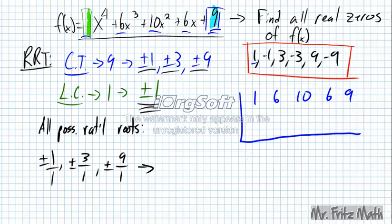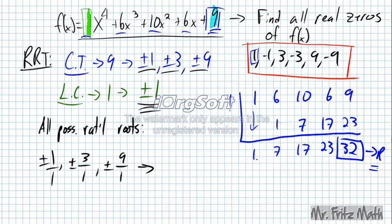I bring the 1 down. Multiply 1 times 1. It's going to give me 1. Add 6 and 1, 7. And I continue this process. So since my remainder is not equal to 0, then I've confirmed that 1 is not one of my rational zeros.